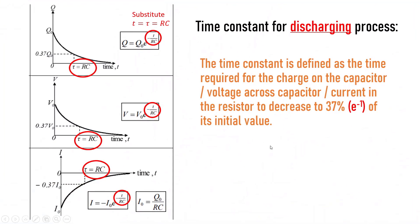Meanwhile, the time constant for charging process is defined as the time required for the charge on the capacitor, or voltage across capacitor, or current in the resistor to decrease to 37% of its initial value.